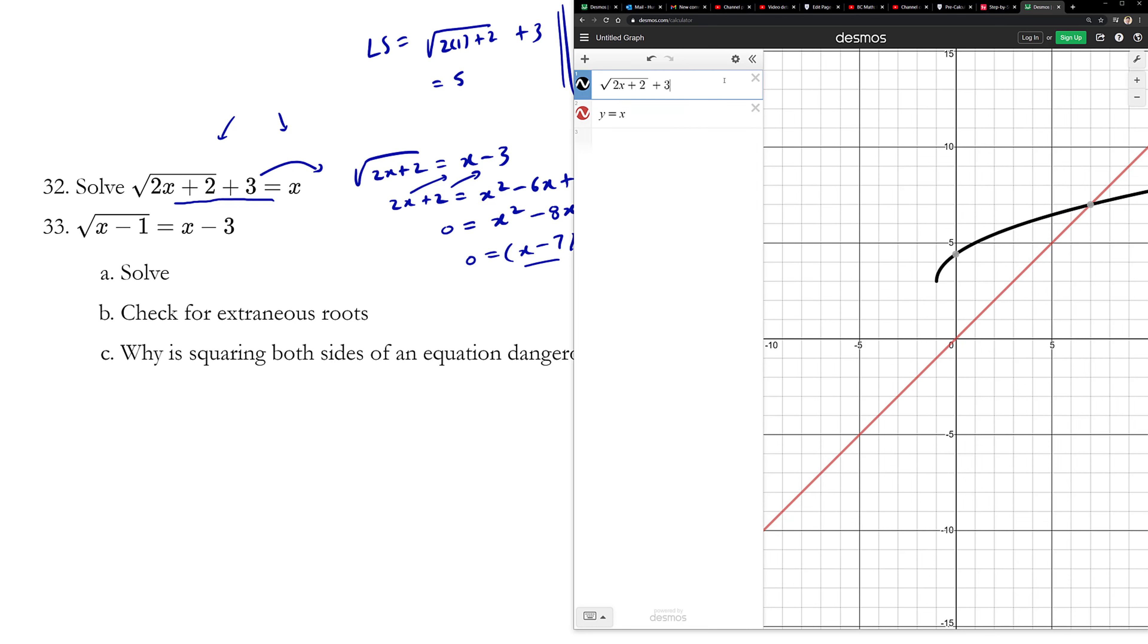And let's try number 33. Simply punch in square root of x minus 1 on Desmos.com. And y equals x minus 3. Clearly the answer is 5. And there's only one solution.